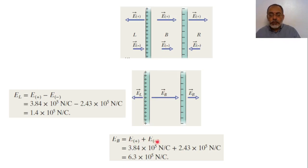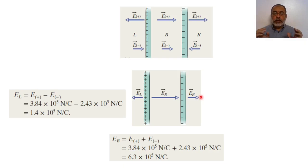To the right: E right = E plus − E minus = 1.4 × 10⁵ N/C in the positive x direction, since E plus is larger and points in positive x. In summary, we have two separate cases: conducting blades, where the electric field cannot pass through the conducting material, and dielectric or insulating blades, where the electric field can pass through. This distinction determines how the fields superpose in each region.